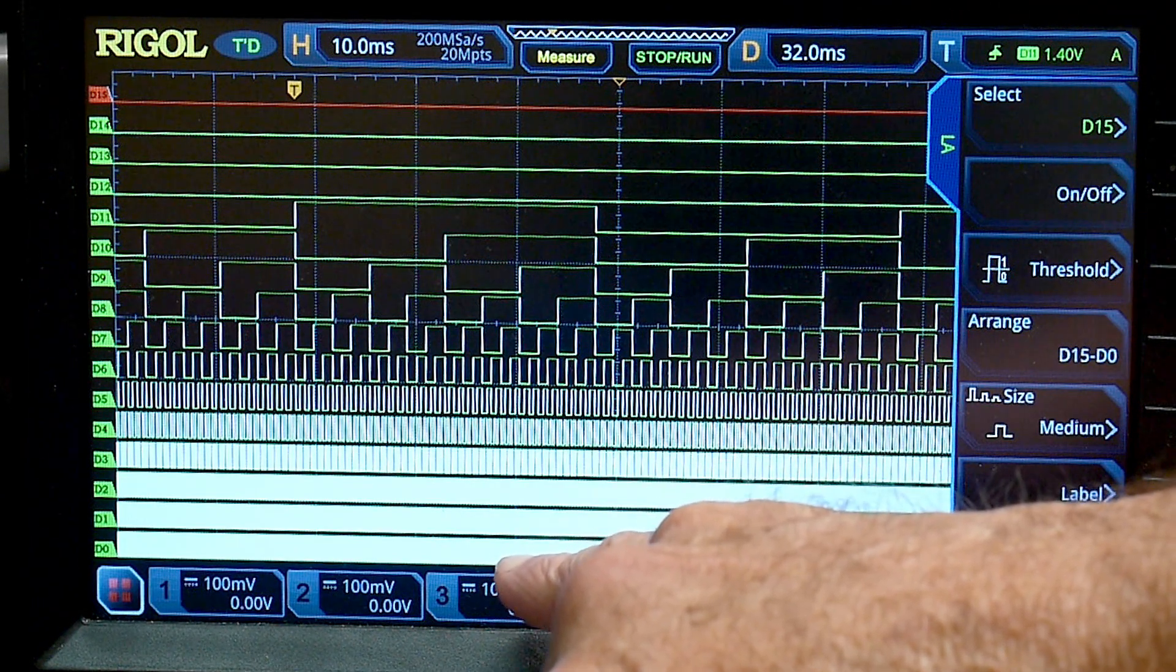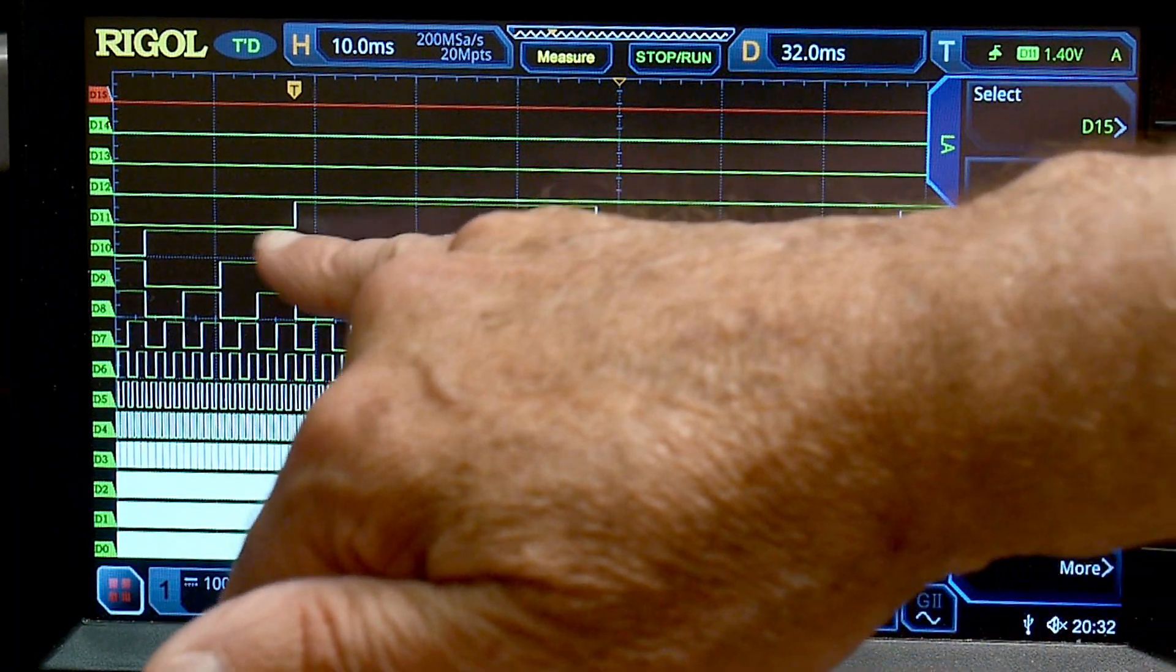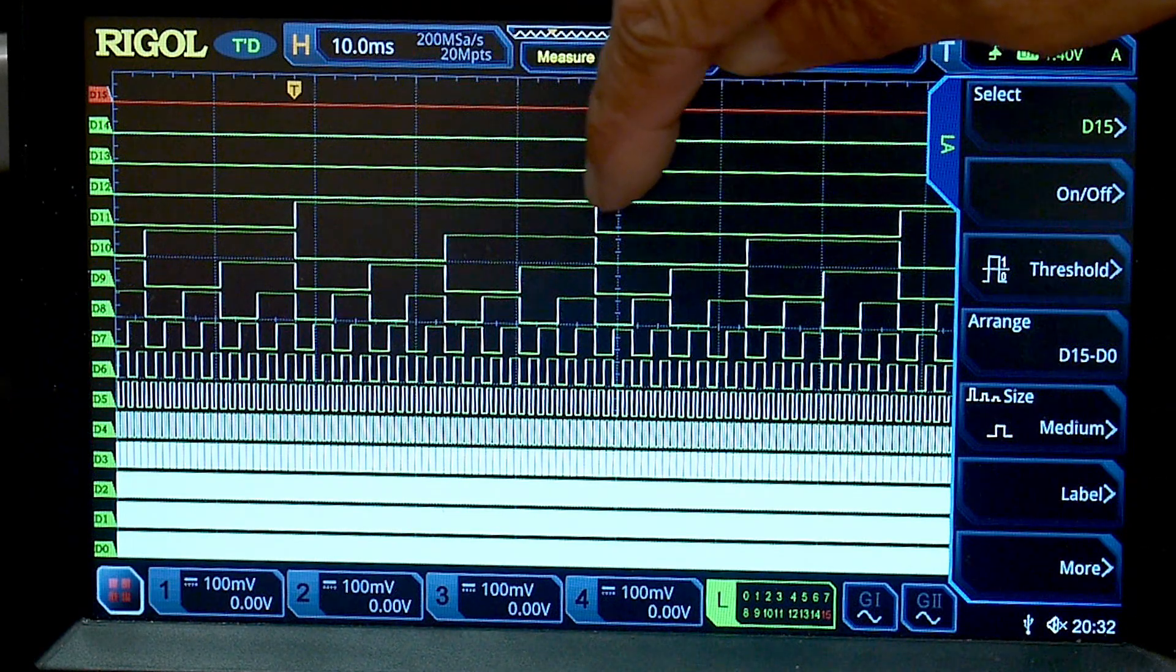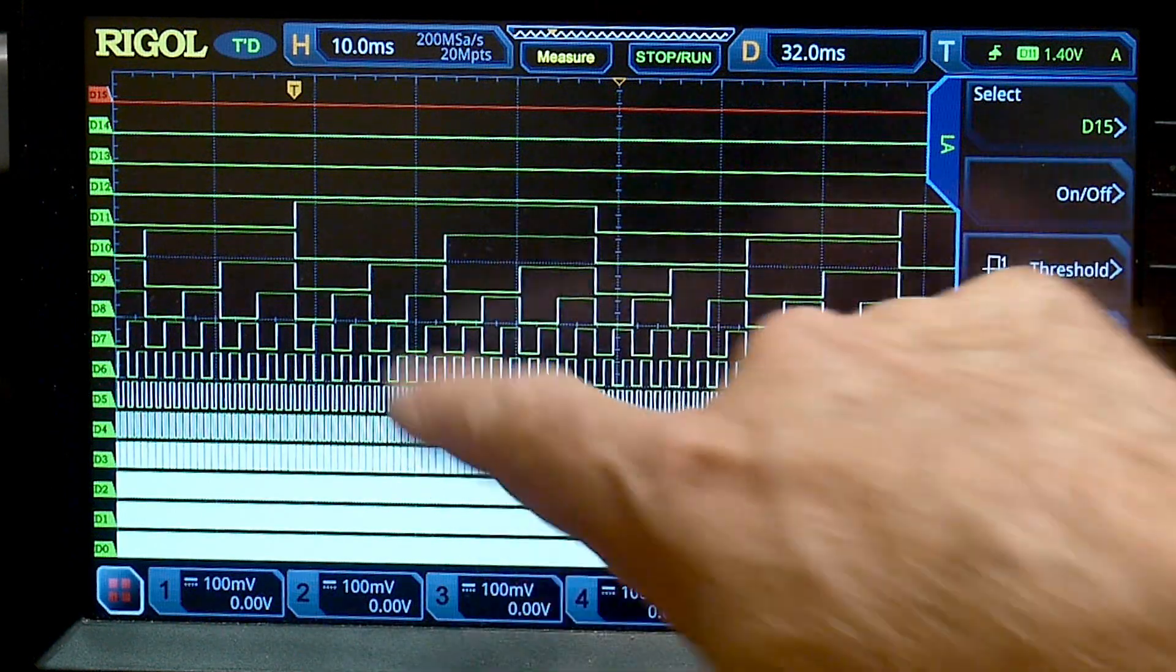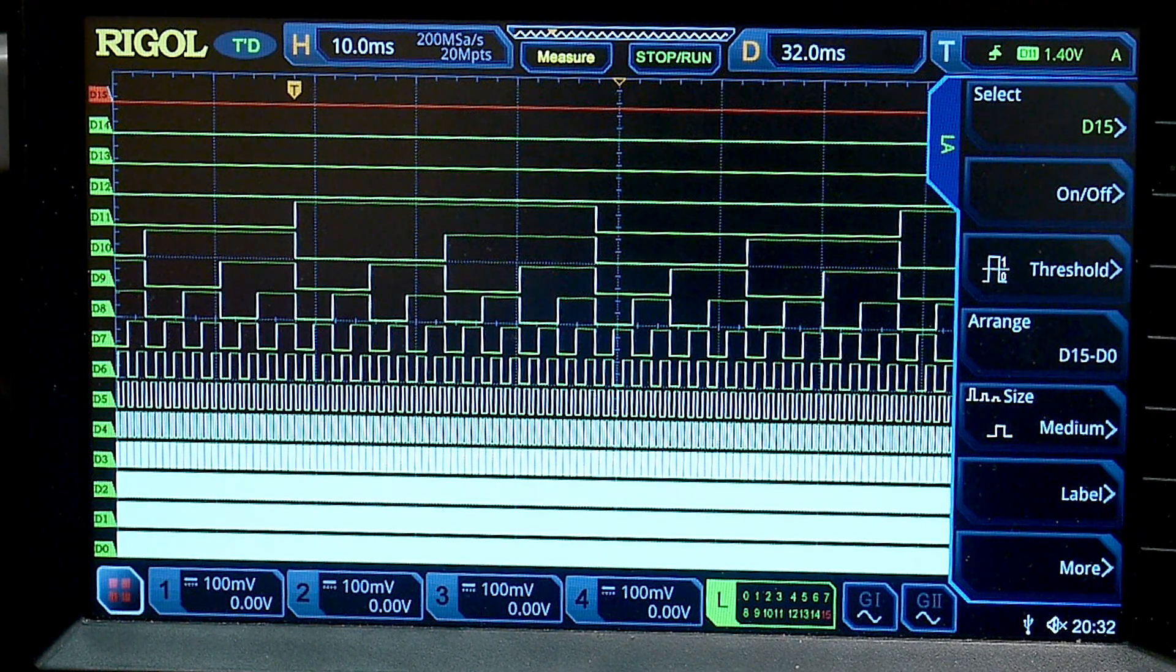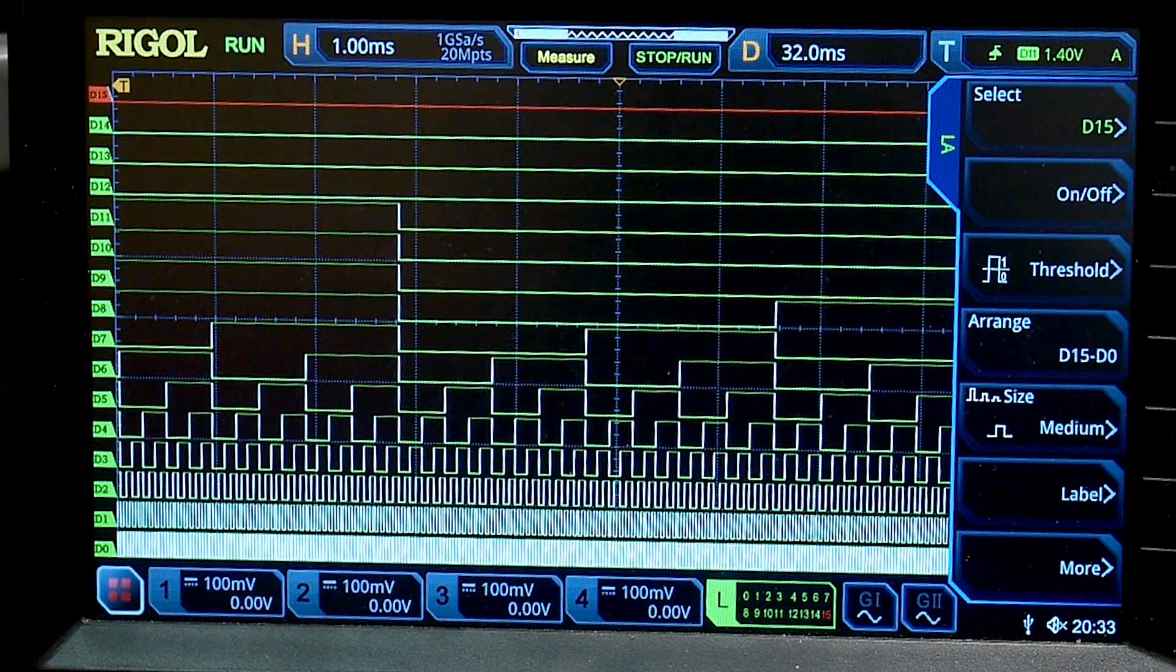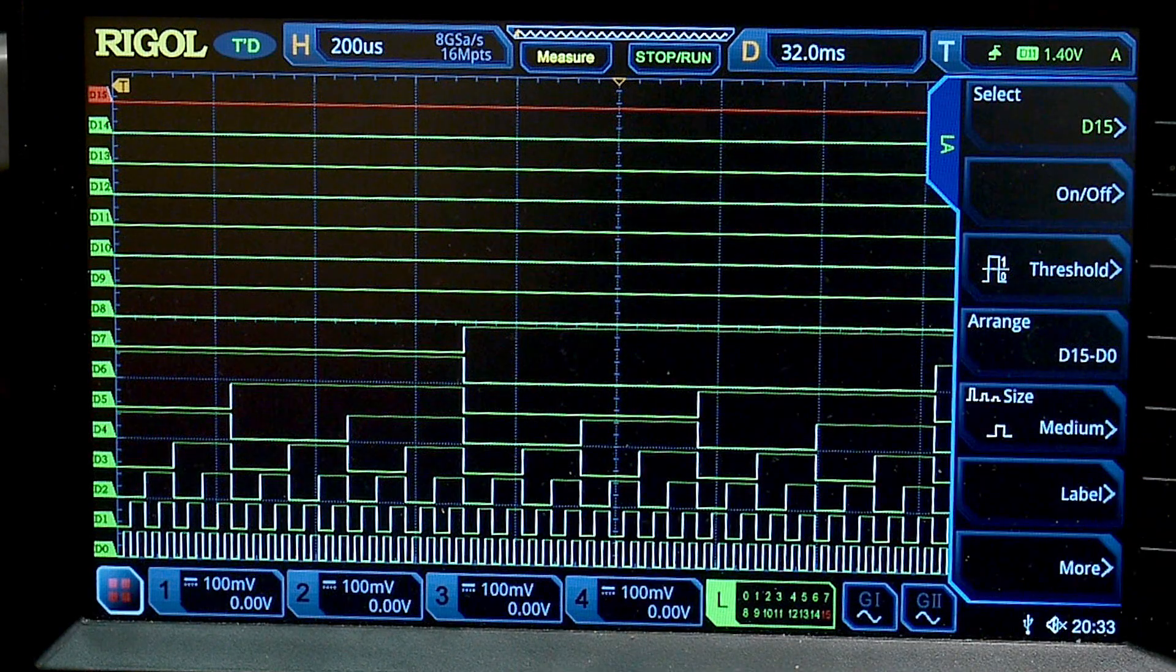You can see Q0, Q1, Q2, Q3, all the way up. The very top one here is high and then low. The next line down is divided by two, and the next line down is divided by two, the next line is divided by two. We can go all the way down to the bottom here and everything's divided by two.